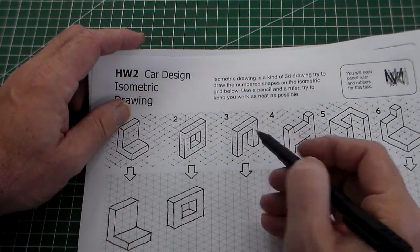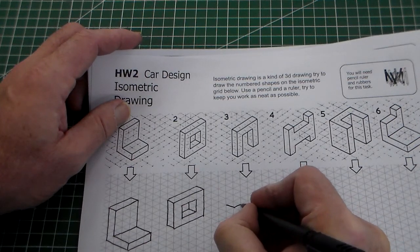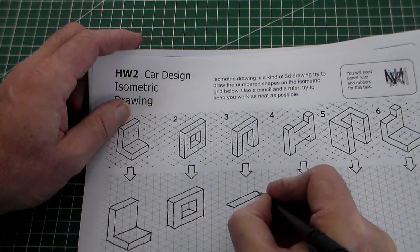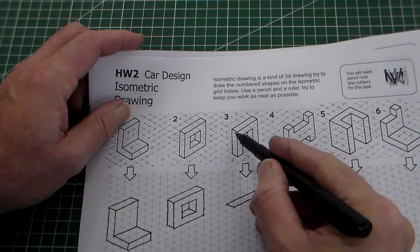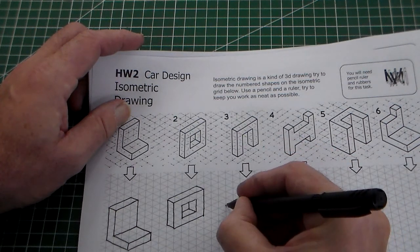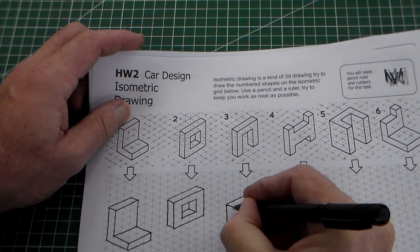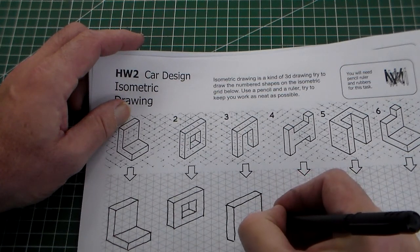Counting the number of squares is important. So just start with this one and we can count down here as well. One, two, three, four. So I'm doing this freehand with a fine liner.